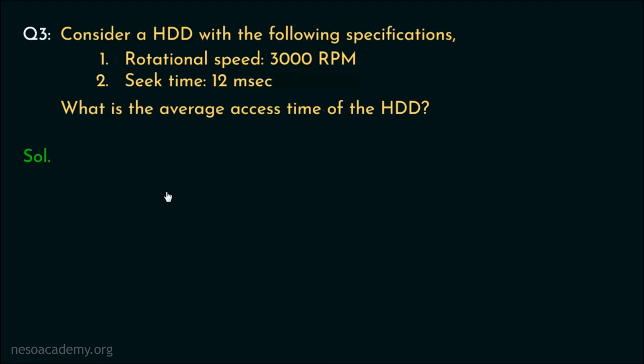In the session, secondary memory hard disk drives, we learned that, the average access time can be represented as Ts, that is, the seek time, plus Tr, that is, the rotational delay, plus T data transfer, that is, the time taken to transfer data. Now, from the available information, we can write 12 milliseconds in place of the Ts, plus Tr, plus T data transfer.